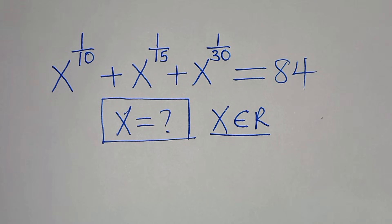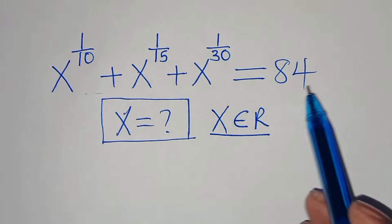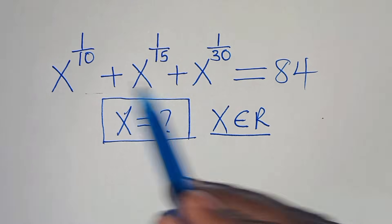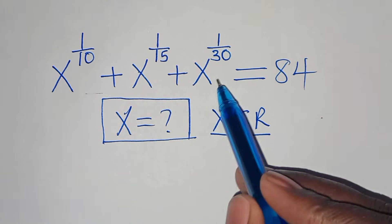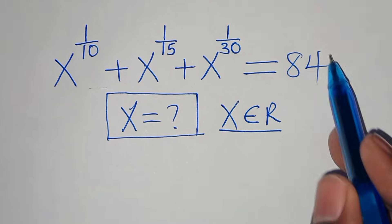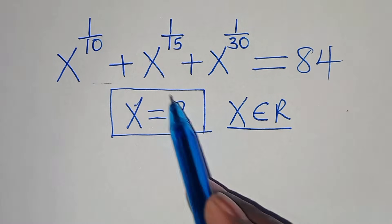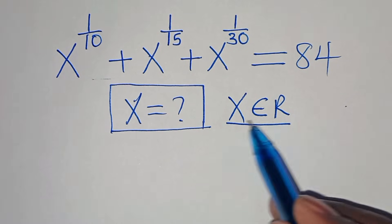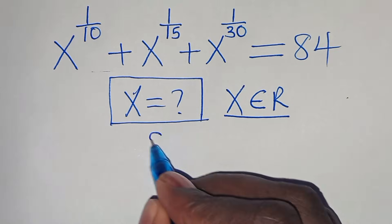Welcome. We're going to solve this algebra problem: x to the power of 1 over 10, plus x to the power of 1 over 15, plus x to the power of 1 over 30, is equal to 84. What is the value of x, given that x is a member of the real numbers?